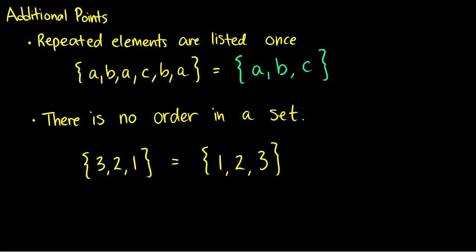So the set {A, B, A, C, C, B, A} is the same set as {A, B, C}, and they would both be drawn as circles with elements A, B, and C. In other words, we don't care about the number of times things appear in there — we don't care if there are three A's or two B's; we just want to know what's inside our circle.